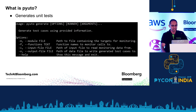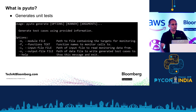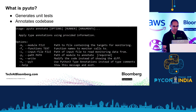This is what the command line looks like. You say PUTO generate, give it a bunch of arguments, and it creates a unit test for your module. Similarly for annotate, you say PUTO annotate and it annotates all your code.